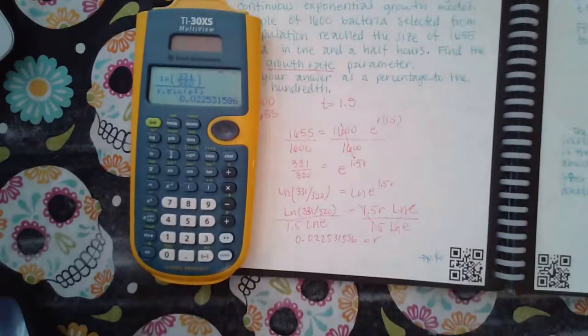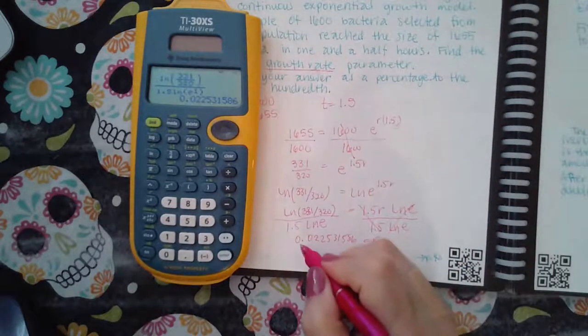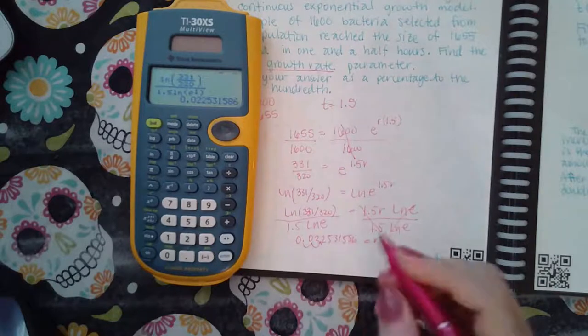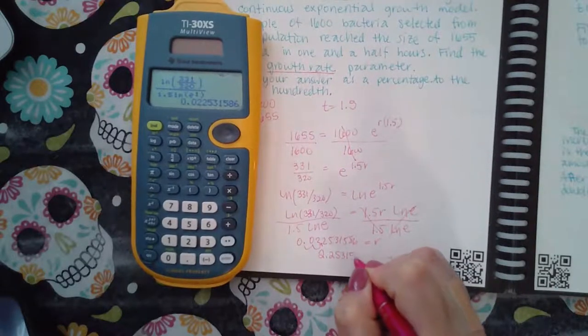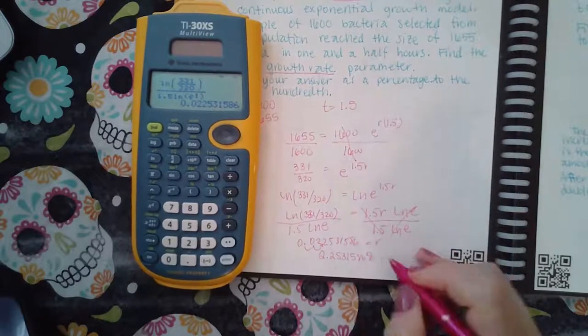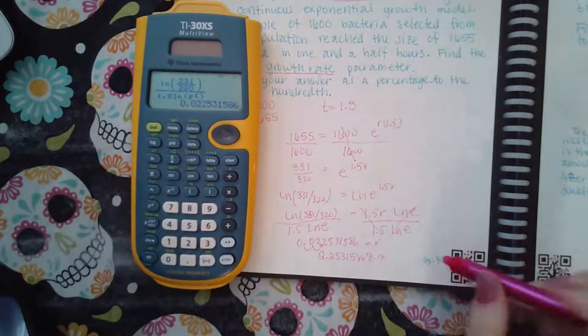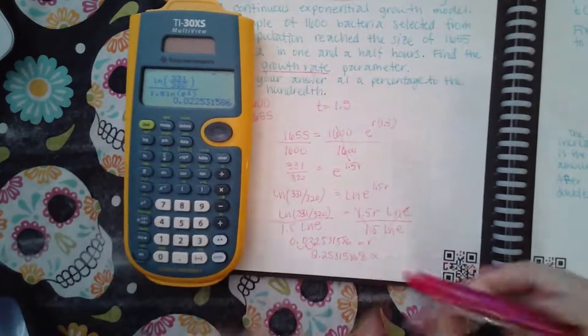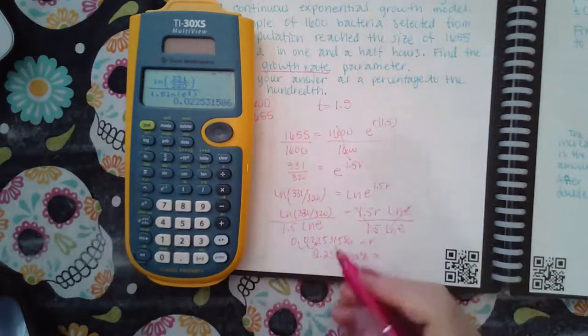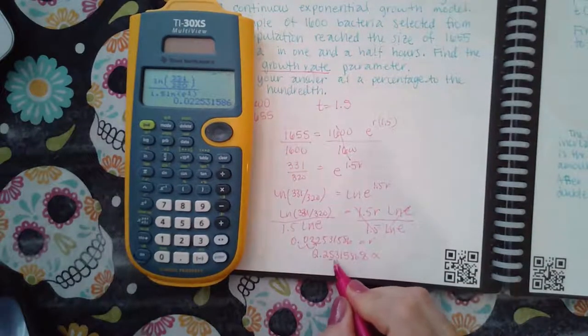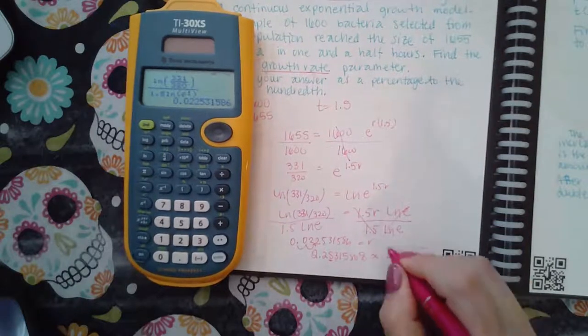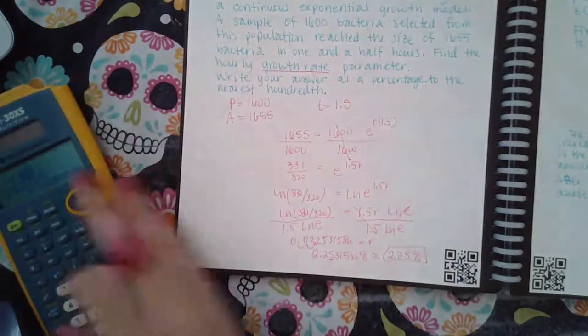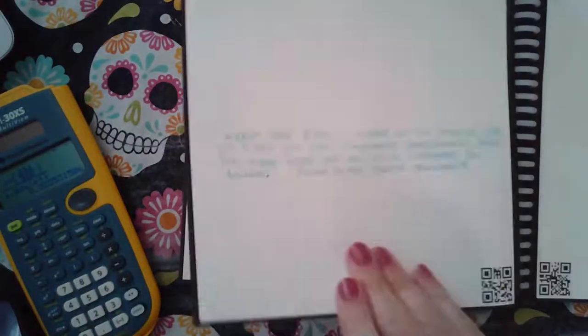I like to write the whole thing because I need to convert it first to a percent, so 2.2531586 percent. Then you need to round that percentage to the nearest hundredths, so tenths, hundredths. This is not going to change, so it becomes 2.25 percent and that is the final answer.